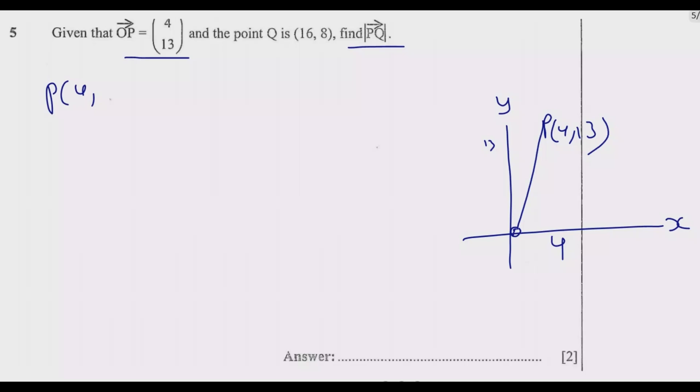So we have P which is (4, 13) as the position vector, then Q which is (16, 8). Again, (16, 8) means if this is 16 somewhere here, just by assumption, then this will be 8 somewhere here, so Q will be somewhere here. So from the origin, this will be where Q lies. So we have this is OQ, then we have OP, then the question is asking us to find PQ, which is from here to here, then find the magnitude of this one.